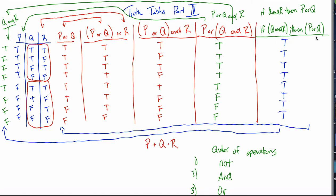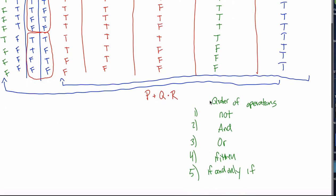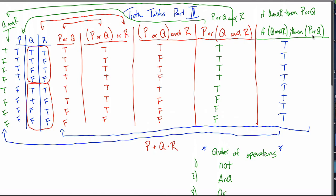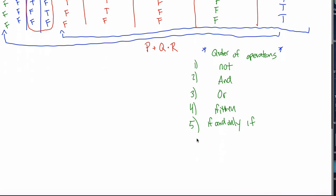Just learn how to deal with all the parts individually and then put them together however you want. Q and R — I can figure that out. P or Q — I can figure that out. If something then something else — I can figure that out. You can do any column that you need. The order of operations is maybe worth a fourth video, but the key point is: if questions are asked without parentheses, put in your own parentheses according to this order. Do the nots first, then the ands, then the ors, then the if-thens, then the if-and-only-ifs.